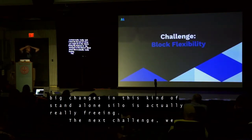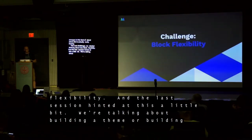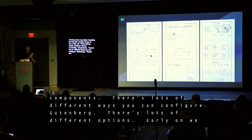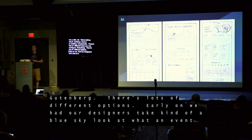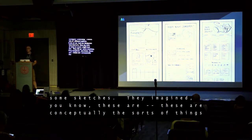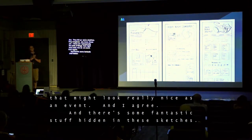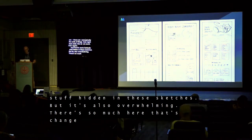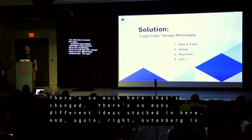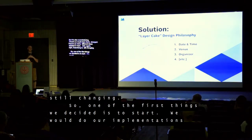The next challenge we started thinking about was block flexibility. There are lots of different ways you can configure Gutenberg. Early on we had our designers take a blue sky look at what an event might look like. They did up some sketches — conceptually the sorts of things that might look really nice as an event. But it's also overwhelming. There's so many different ideas stacked in here, and Gutenberg's still changing. So one of the first things we decided is that we would do our implementations with this design concept of layer cake.